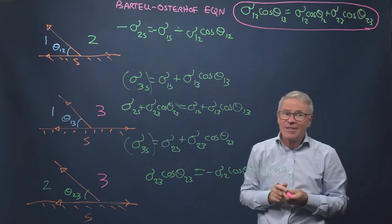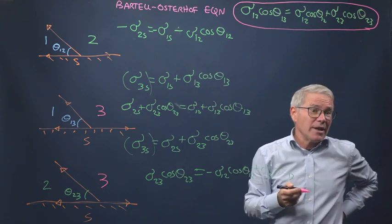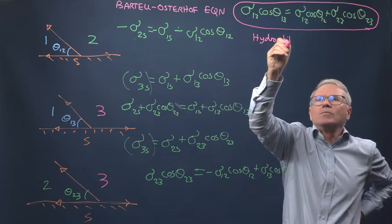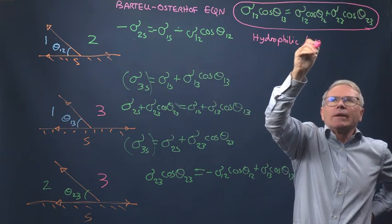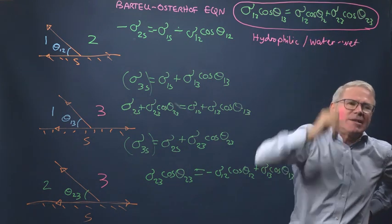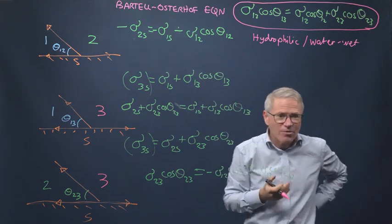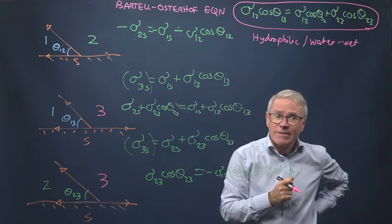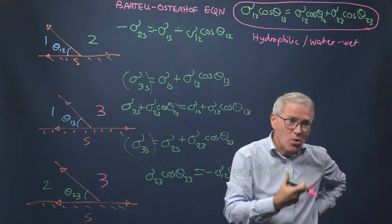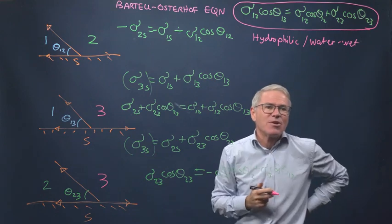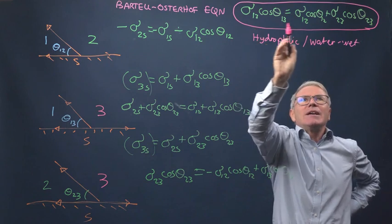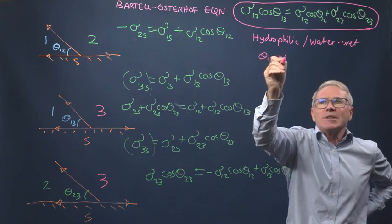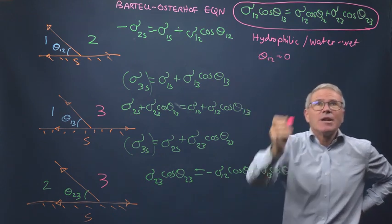Let's take the first case - something that's strongly hydrophilic or water wet. Imagine I have a material, a rock or fibers, that in the presence of oil, water is the wetting phase. It's water wet in the presence of oil. So theta 1,2 is approximately zero, low contact angles. So the cosine is approximately 1.